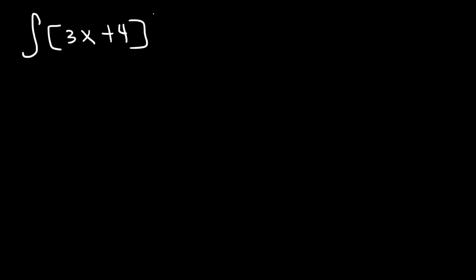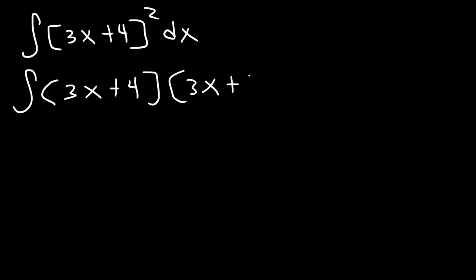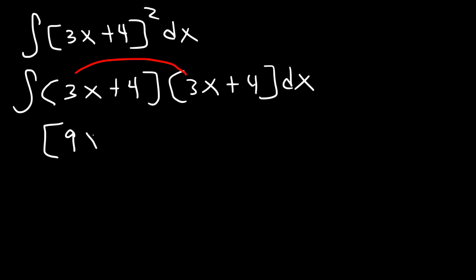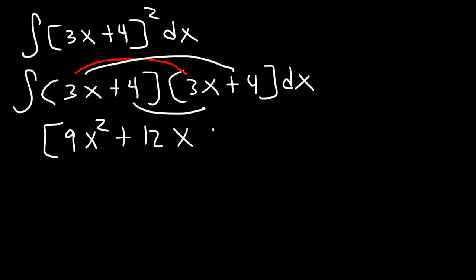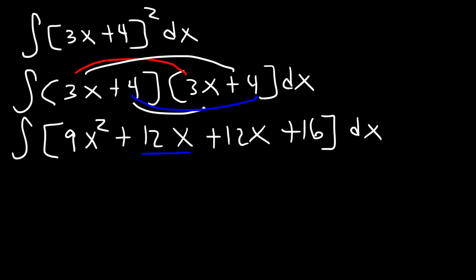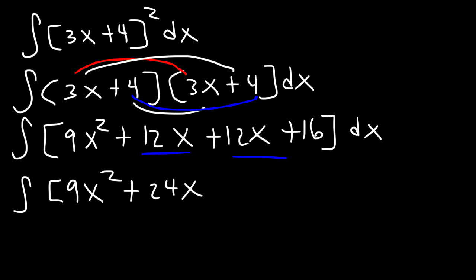Go ahead and find the antiderivative of (3x + 4) squared. You don't want to integrate it in this form — instead, FOIL 3x plus 4, which is equivalent to 3x plus 4 times another 3x plus 4. So 3x times 3x is 9x squared, 3x times 4 is 12x, 4 times 3x is also 12x, and 4 times 4 is 16. Combining like terms: 12 plus 12 is 24, giving us 9x squared plus 24x plus 16.